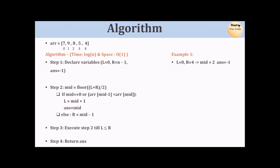Let's do a dry run on [7, 9, 8, 5, 4]. Left is 0, right is 4, and answer is -1. Middle is 2. We compare the element at index 1 (which is 9) with the element at index 2 (which is 8). Since the previous element 9 is bigger, we are in a strictly decreasing sequence, so we shift right to mid-1, making right equal to 1.